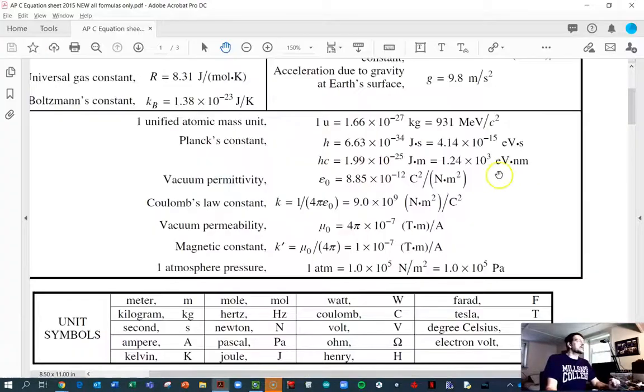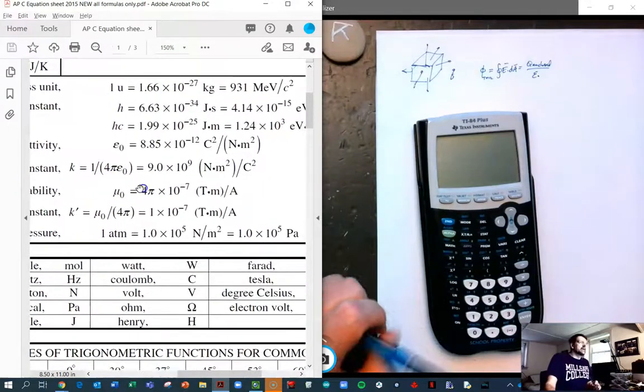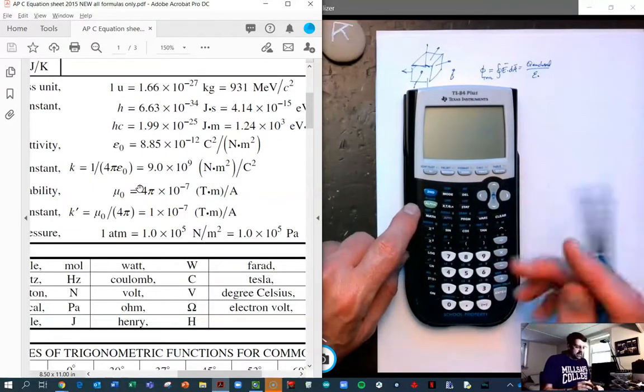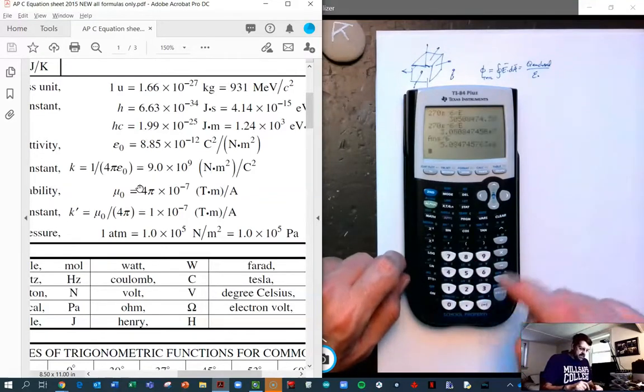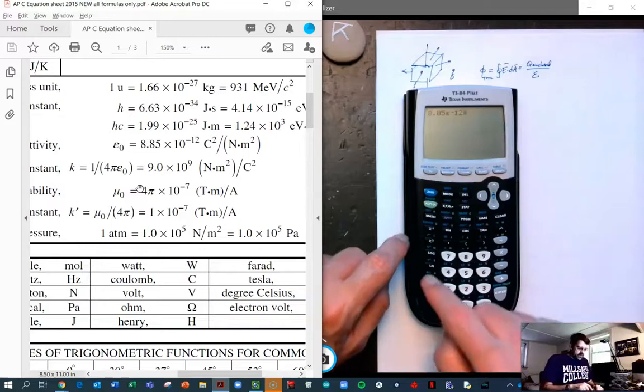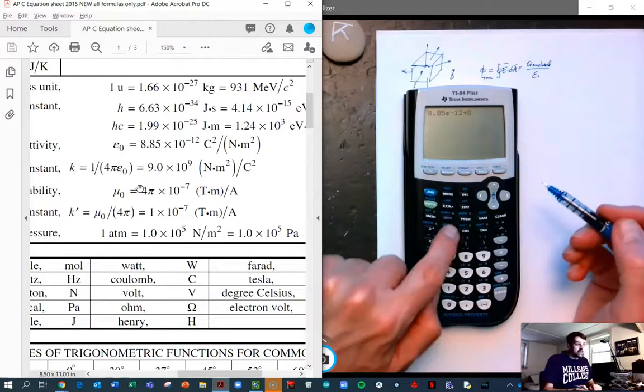And what is epsilon naught? It's the vacuum permittivity as stated by the AP. I like to call it the permittivity of free space. And at any rate, it's this number. And so what I would like to do here is I am going to plug that into my calculator. I'm going to store it as E because we're going to use it a lot in this assignment. So I'm going to type in the number 8.85 times, oh gosh, it helps turn it on. 8.85 times 10 to the minus 12th. I'm going to store that in alpha E. So we're going to turn on alpha and that will get us little green letters. And then E.